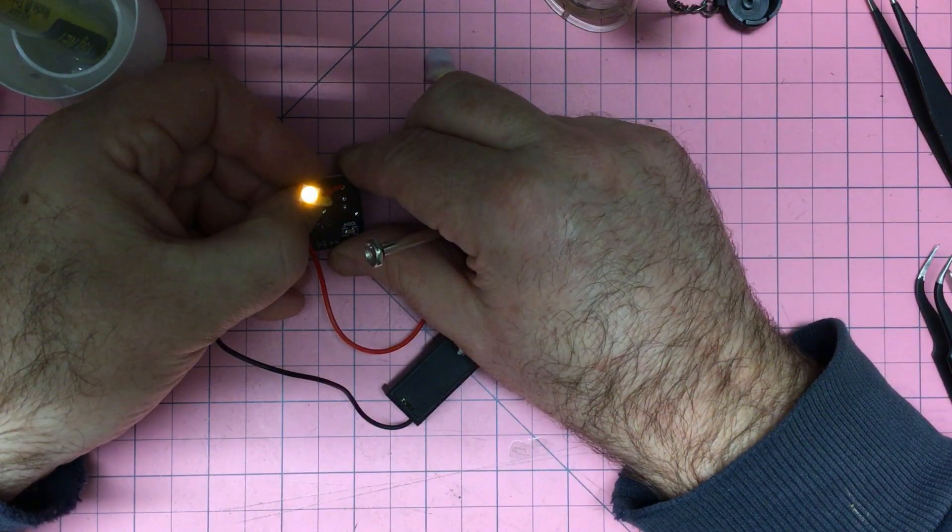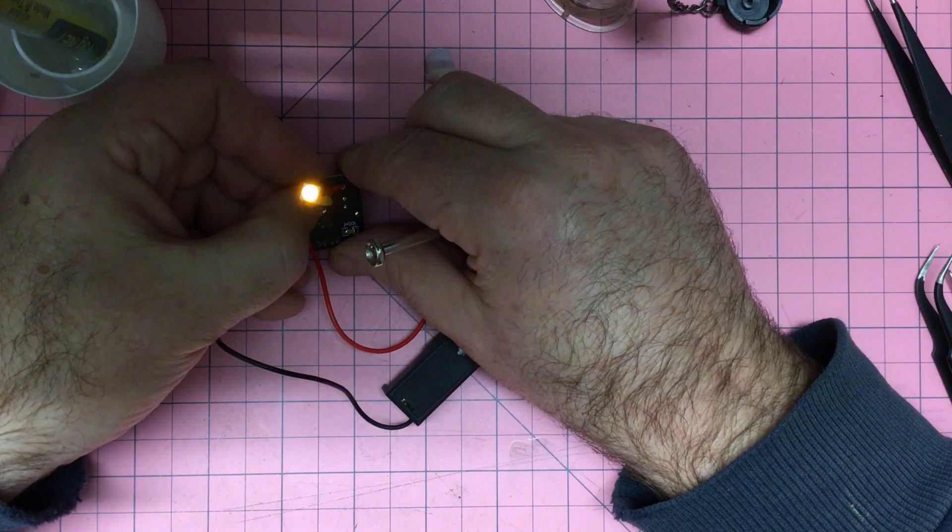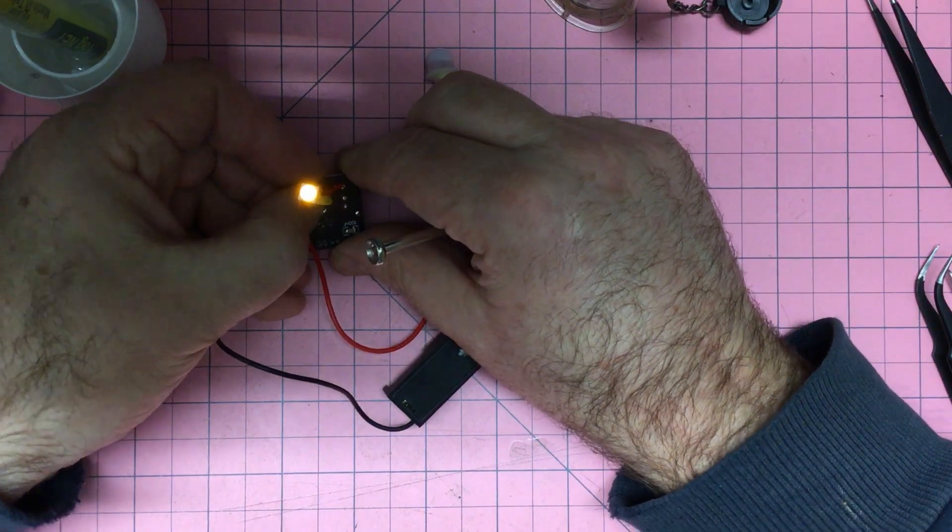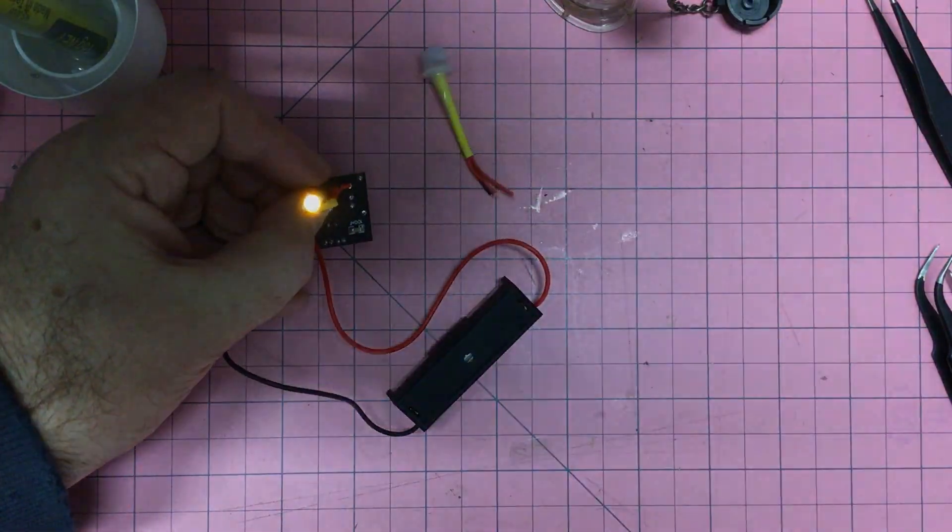So yeah, that's it. That's the circuit working. It doesn't really do it justice until you see it live. This is actually slowed down a little bit just to show the variation, but yeah, that's the 5050, very useful LED for this project.